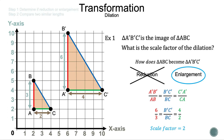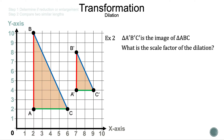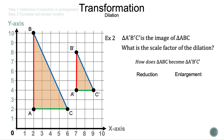Now let's take a look at example two. Triangle A'B'C' is the image of triangle ABC. What is the scale factor of the dilation? The first question: how does triangle ABC become triangle A'B'C'? Is it a reduction — smaller — or an enlargement — bigger? Looking at the graph, triangle A'B'C' is smaller, so we have a reduction, which means the scale factor has to be less than one.